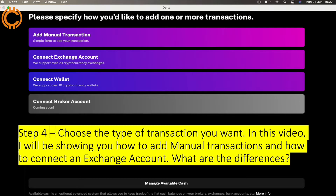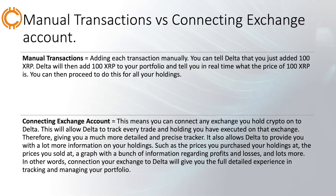So what are the differences? Manual transactions basically means that you are adding each transaction manually. You can tell Delta that you just added 100 XRP — Delta will then add 100 XRP to your portfolio and tell you in real time what the price of XRP is. Connecting an exchange account means you can connect any exchange you hold crypto on to Delta. This allows Delta to track every trade and holding you have executed on that exchange, giving you a much more detailed and precise tracker. It also provides prices you purchased at, prices you sold at, profit and loss graphs, and lots more.